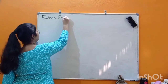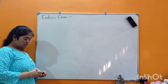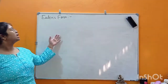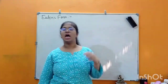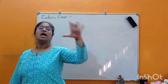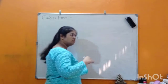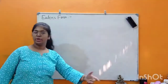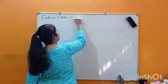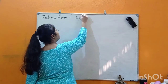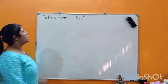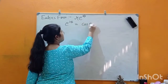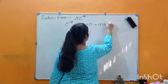Euler's Form. In the previous video we learned how to represent any complex number in polar form. Now we are going to learn how to represent any given complex number in Euler's Form. Euler's Form says that the complex number should be written as r·e^(iθ), where e^(iθ) represents cosθ + i·sinθ.